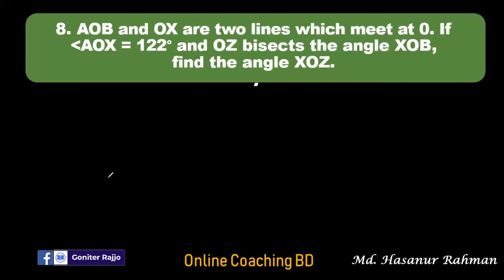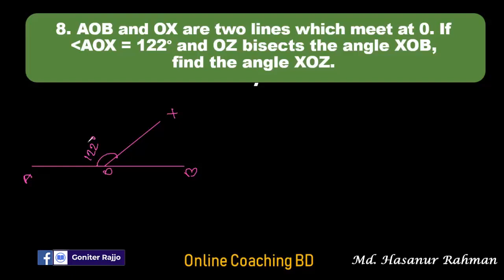Number eight: AOB and OX are two lines meeting at O. The angle AOX equals 122 degrees, and OZ bisects angle XOB. Bisect means equally divided by two. So OZ bisects angle XOB means angle XOZ equals angle BOZ.